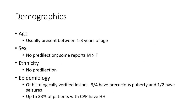In epidemiology of histologically verified lesions, three-quarters have precocious puberty and one-half have seizures. Up to 37% of patients with central precocious puberty (CPP) have HH.